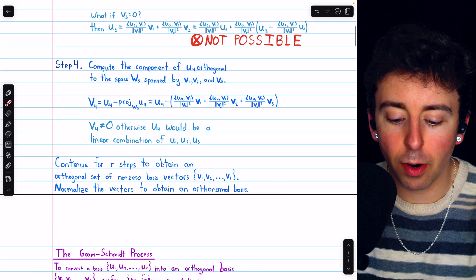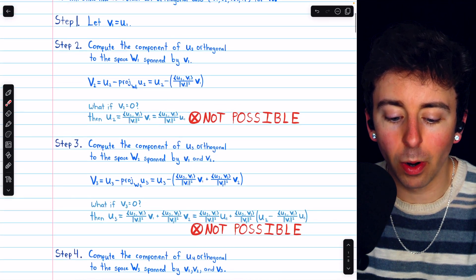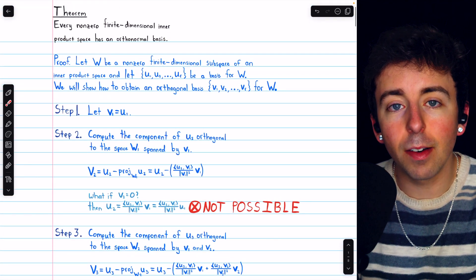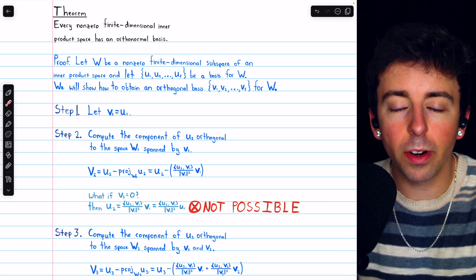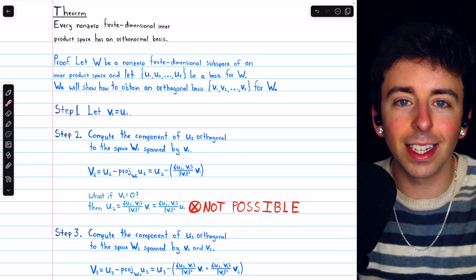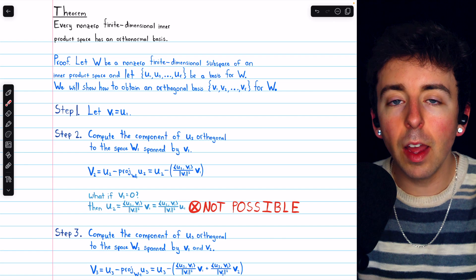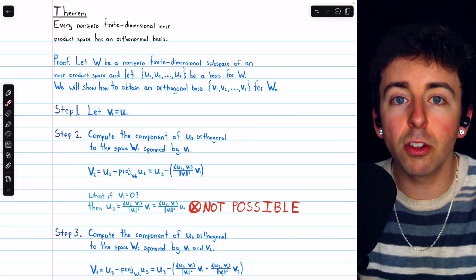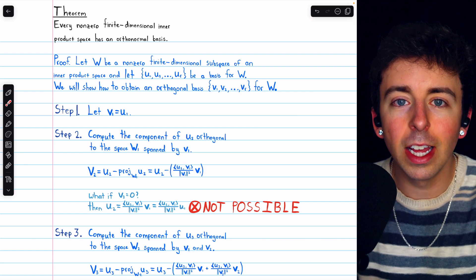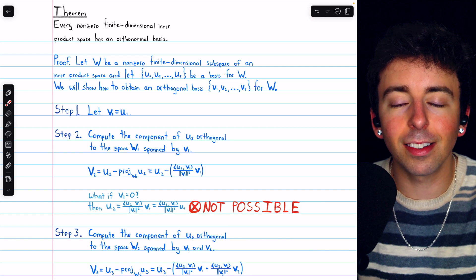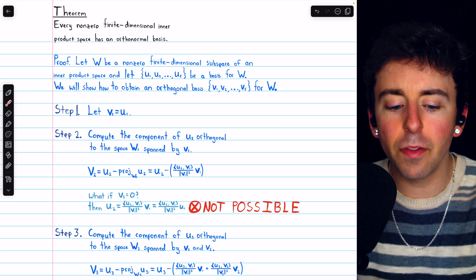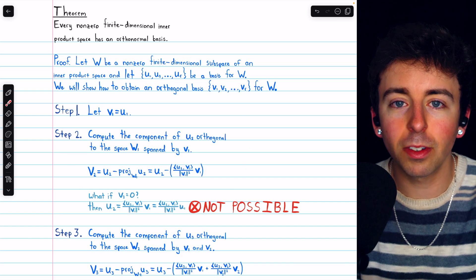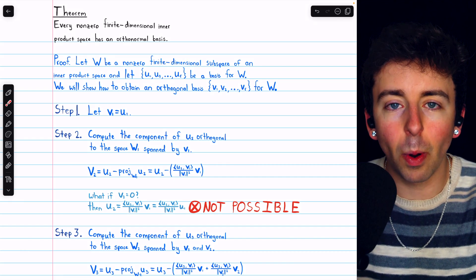That is the Gram-Schmidt process and a proof of this important theorem. Let me know in the comments if you have any questions, and be sure to check out my linear algebra course and linear algebra exercises playlists in the description for more. If you find my videos helpful, please consider supporting what I do by joining Wrath of Math as a channel member. You can get early and exclusive access to select videos and extra practice, and if you join at the premium tier or above, you can access the lecture notes that I use in my courses. Thanks for watching.